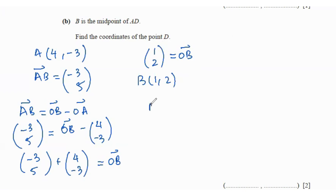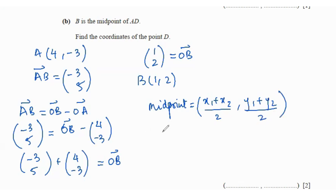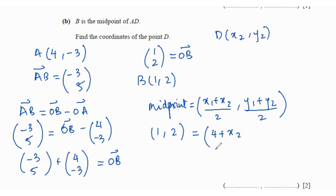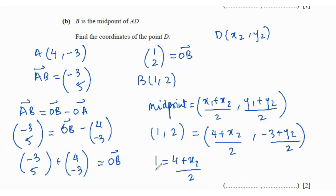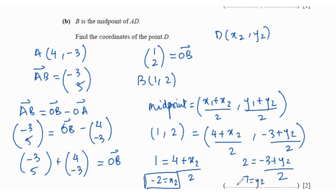Using the midpoint formula — (x₁ + x₂)/2, (y₁ + y₂)/2 — with B = (1, 2) as the midpoint of A = (4, -3) and D = (x₂, y₂): 1 = (4 + x₂)/2 gives x₂ = -2, and 2 = (-3 + y₂)/2 gives y₂ = 7. So D is (-2, 7).